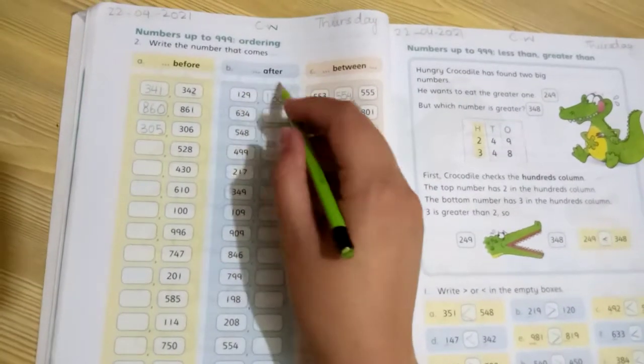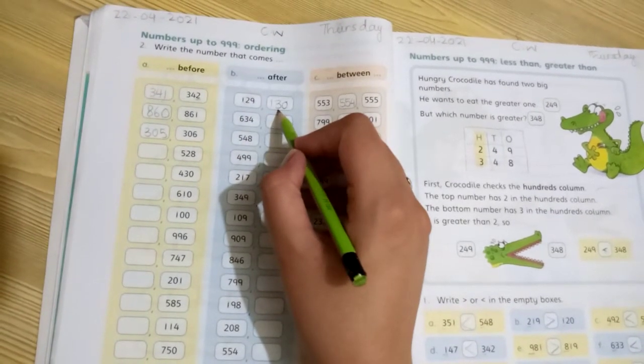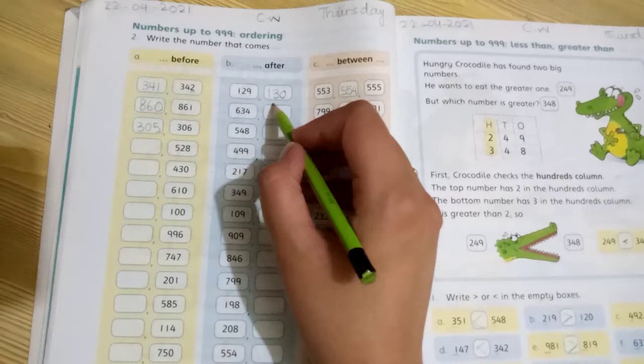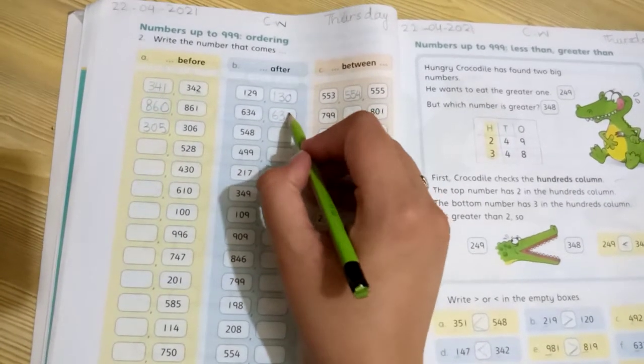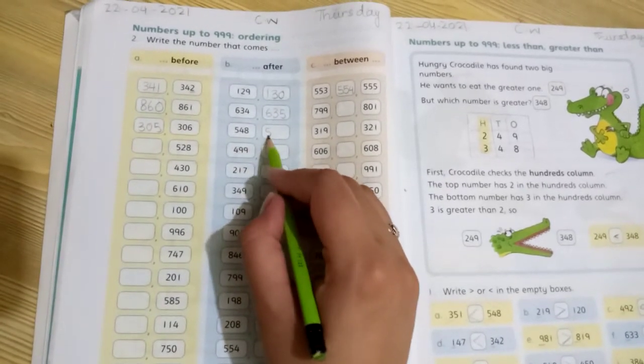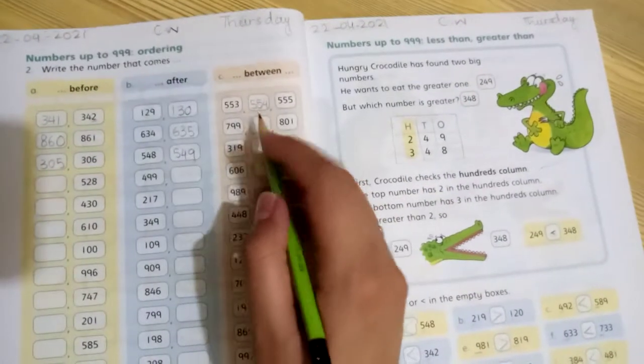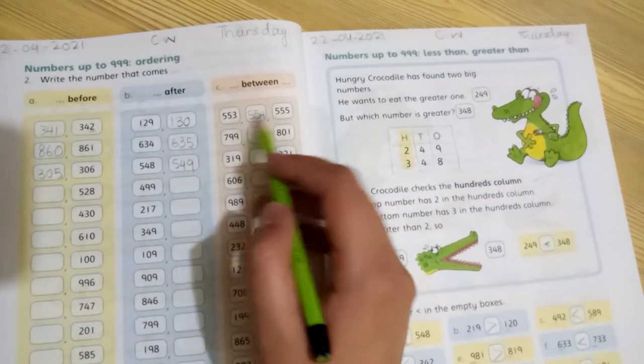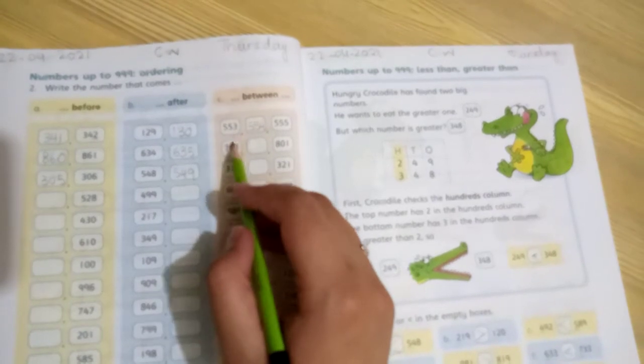Next, what comes after. What comes after 129? What comes after 29, so 130 you have written. Next, 634, what comes after 634. This way, 548, 549.